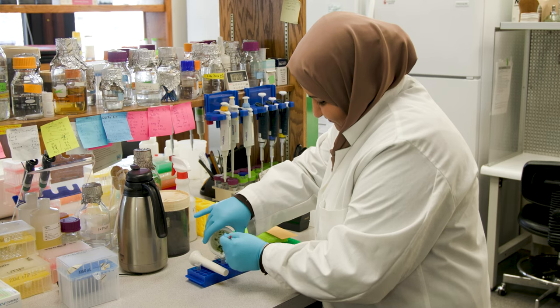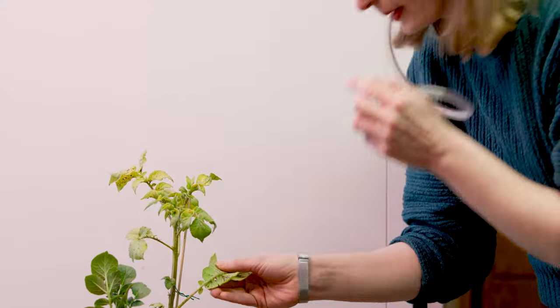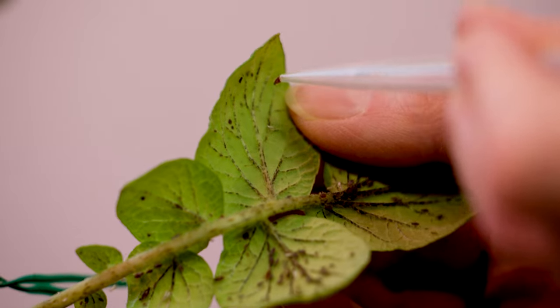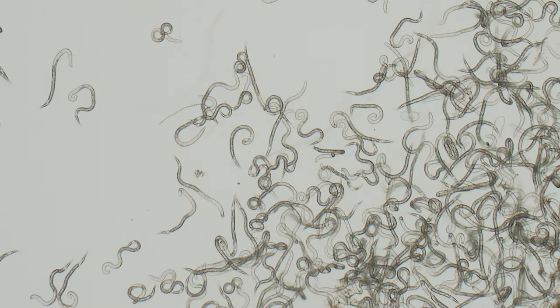A focus of my research is pests that attack the sugar transport system in plants. So that includes sap feeding insects like aphids, it includes parasitic worms called nematodes that attack the root system.